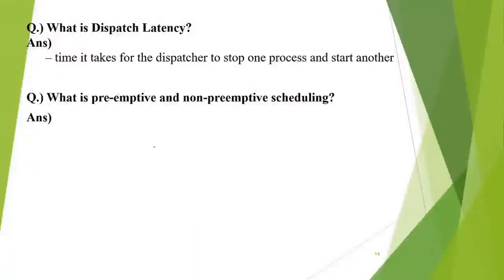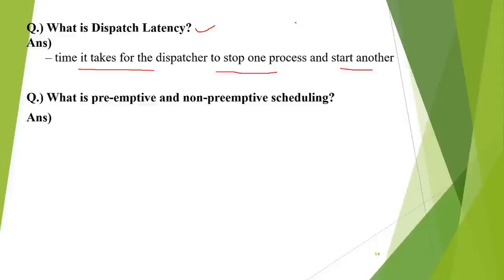Dispatch latency is basically the amount of time required by the dispatcher to perform the dispatching operation. It is the time used by the dispatcher to stop one process and start another one. The short-term scheduler selects the process to get the CPU from the ready queue, and one by one the processes are moved from the ready queue to the running state and the CPU is provided to them.